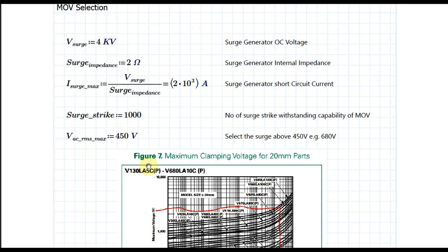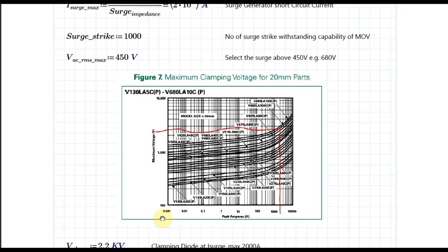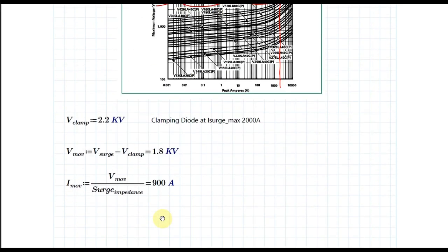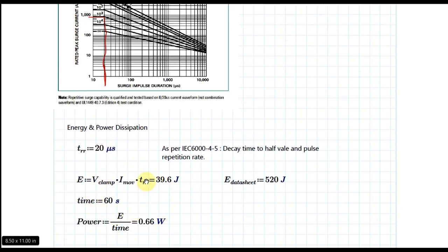To summarize: select your MOV based on your RMS input voltage, and define your clamping voltage based on the ratings of your external components such as MOSFETs, ICs, and diodes. Define the required number of surge strikes, and verify that your MOV meets the energy and power criteria. Also ensure the MOV leakage current is within acceptable limits. I hope this helps you start your MOV design — feel free to ask questions in the comments. Thanks for watching!